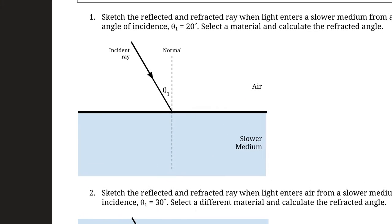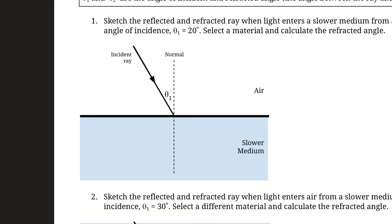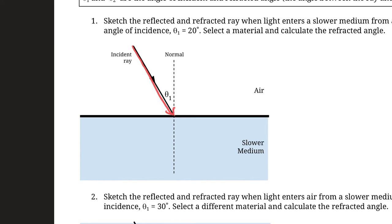When we have light coming in from air into a slower medium like water, how is that light going to bend? We know it's going to bend because there's a different speed. If it's coming in at an angle, is it going to bend outwards or inwards? One way to think about this is to consider the light waves as a beam of peaks and troughs.